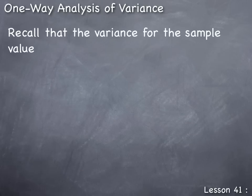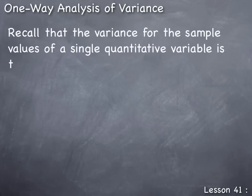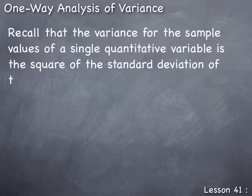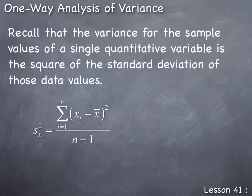Recall that the variance for the sample values of a single quantitative variable is the square of the standard deviation of those data values, and is given by S sub X squared.